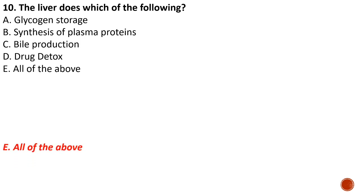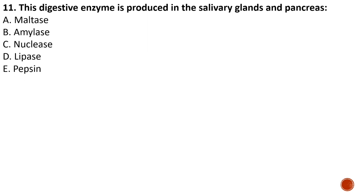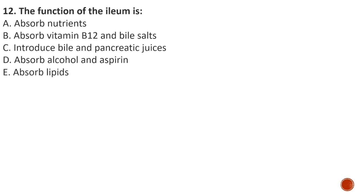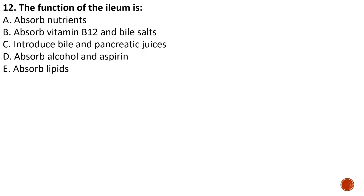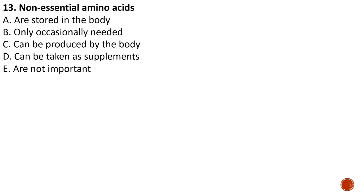Question number eleven: the digestive enzyme produced in both the salivary gland and the pancreas is amylase — pancreatic amylase or salivary amylase. Question number twelve: the function of the ileum is — A) absorption of nutrients, B) absorb vitamin B12 and bile salts, C) introduce bile and pancreatic juice, D) absorb alcohol and aspirin, E) absorb lipids. The answer is A — absorption of nutrients — which is the primary function of the ileum.